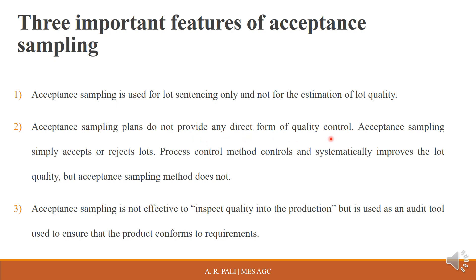Acceptance sampling plans do not provide any direct form of quality control. Acceptance sampling simply accepts or rejects lots. Process control methods control and systematically improve lot quality, but acceptance sampling does not. Control charts and other process control techniques are used to control process or product quality; acceptance sampling is only used for lot sentencing.